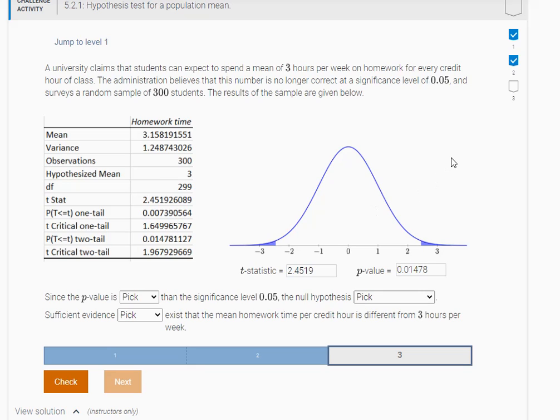Okay so you have to decide if you're gonna reject or fail to reject the null. Well you look at the p-value. If the p-value is less than the level of significance, you're going to reject the null hypothesis. So we see that the p-value is less than the level of significance.